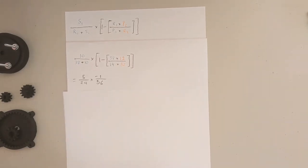So if we just do the math, we get 5 over 24 times negative 1 over 56. The negative 1 just means that the output is rotating in the opposite direction of the input. So that just gives us negative 0.00372, which means we have for every one rotation on the input sun we get 0.00372 output.